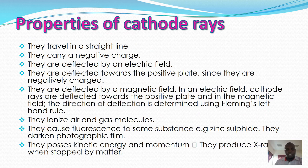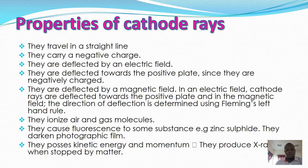Properties of cathode rays: they travel in a straight line; being electrons, they are negatively charged; they are deflected by electric fields; they are deflected towards the positive plate since they are negatively charged; they are deflected by magnetic fields; they ionize air and gas molecules; they cause fluorescence of substances like zinc sulfide; they darken photographic film; they possess kinetic energy and momentum; and they can be stopped by matter.